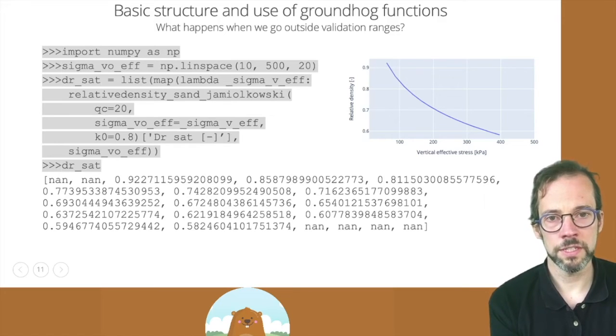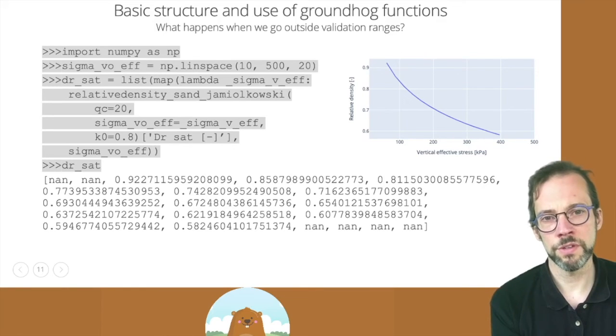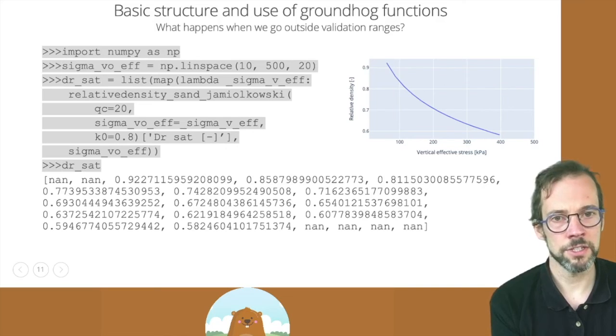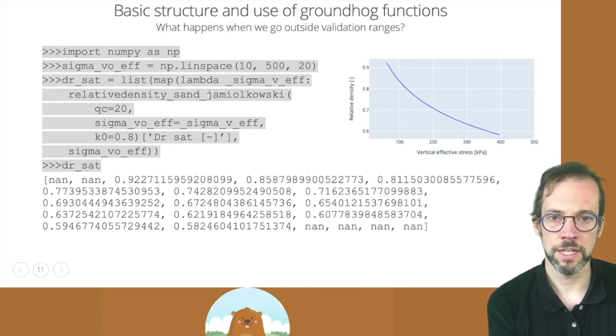So the result is an array, and you can immediately see what happens if you go outside the validation ranges. So the first two values and the first and the last four values were for vertical effective stresses outside the validation range. And the calculation has returned NAN there, not a number, and this will ensure that you can still safely plot the output of this function without generating errors.